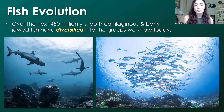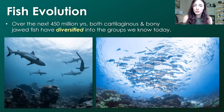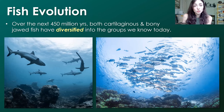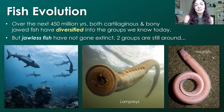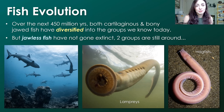Over the next 450 million years to today, both cartilaginous and bony jawed fish have diversified into all the groups we know today, from sharks to goldfish. Importantly, jawless fish did not go extinct — they're still around. Currently on modern Earth, they're represented by two extant or living groups: the lampreys and the hagfish.